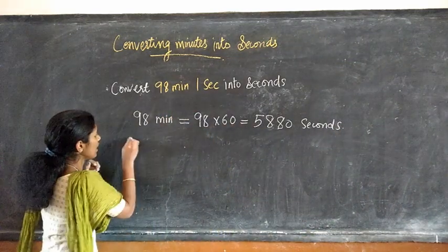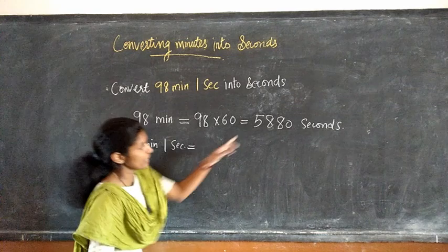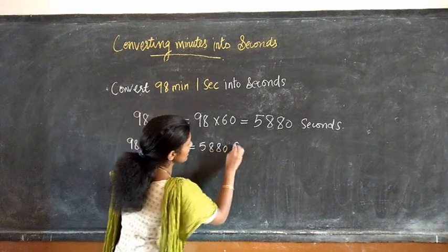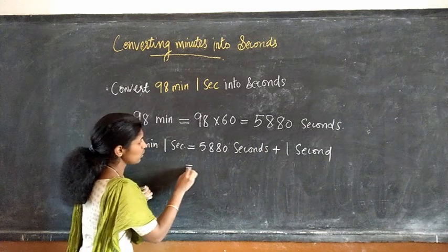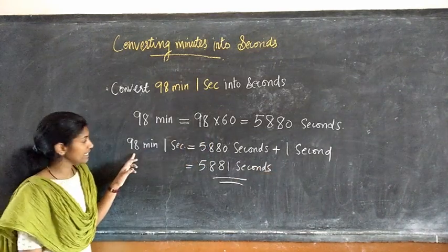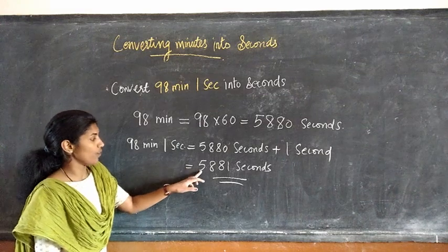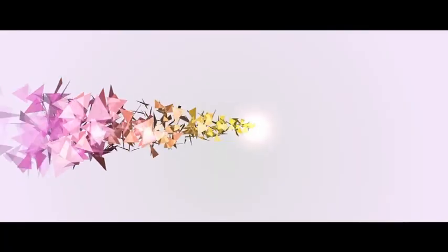Next question: convert 98 minutes 1 second into seconds. First, 98 minutes equal to 98 into 60, that is equal to 5880 seconds. We have to convert 98 minutes 1 second. So 98 minutes 1 second equal to 5880 seconds plus 1 second, that is equal to 5881 seconds. Once again, 98 minutes 1 second equal to 5881 seconds.